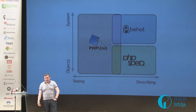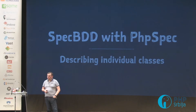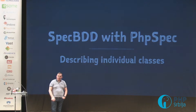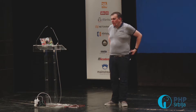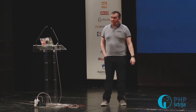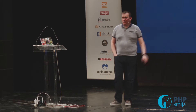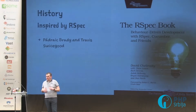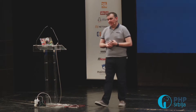PHPSpec is opinionated — we have little interest in helping you test bad code. It's at the spec level, the class level, and it's all about describing classes by giving examples. The project was started by Travis and Padrig. It was inspired by a really nice tool called RSpec. Both Behat and PHPSpec were inspired by tools from the Ruby community because a lot of the early BDD automation was done in Ruby.